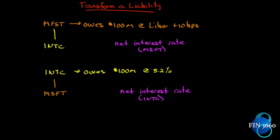Let's look at one application of a swap: transforming a liability. Using the Microsoft and Intel example — Microsoft owes a hundred million at LIBOR plus 10 basis points, and Intel owes a hundred million at 5.2%. Microsoft has floating rate external debt and wants a fixed rate, so it is willing to pay Intel 5% fixed to get the fixed rate it wants.